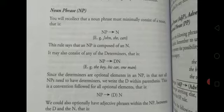Since the determiners are optional elements in a noun phrase, in that not all NPs need to have determiners, we write the D within parentheses. This is a convention followed for all optional elements, that is NP arrow (D) N.